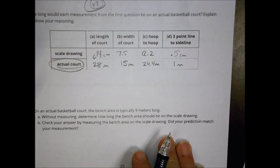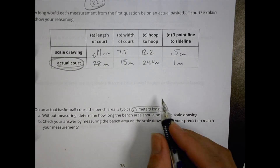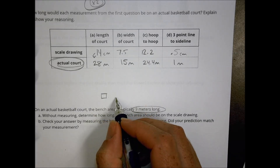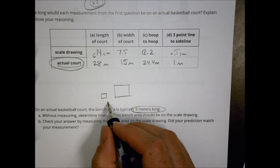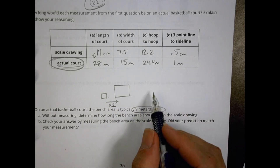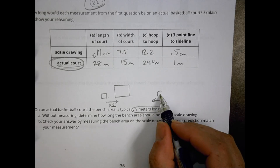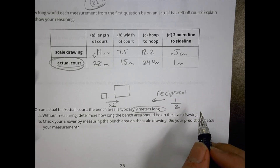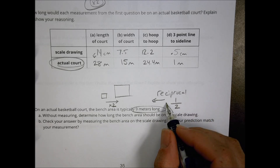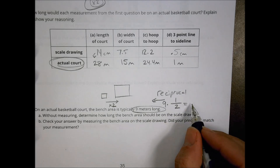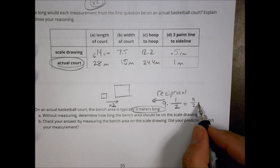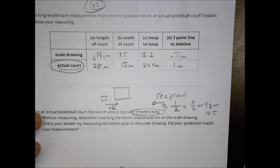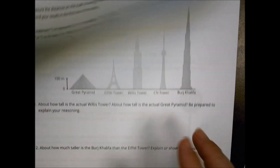They give you a final question about the basketball court bench being nine meters long. Like we said in a previous lesson, going from a drawing to the actual, my scale factor is times two. If I wanted to go the other way, I use the reciprocal. The reciprocal of two is one over two, so my scale factor will be half of that. So I do nine times a half, which ends up being nine over two, or four and a half, or 4.5 — whichever way you're comfortable with.